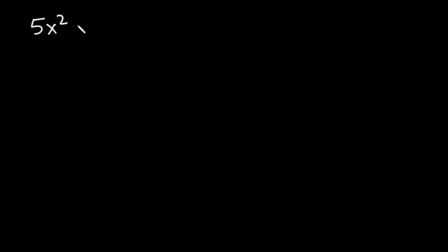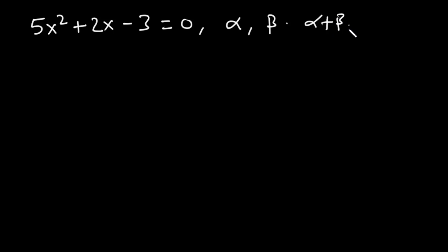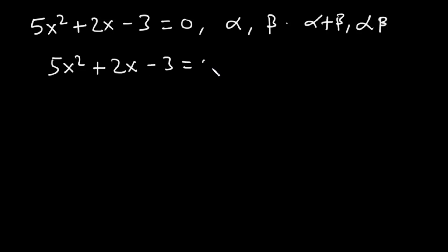Now, let's solve an example. If the roots of a quadratic equation five x squared plus two x minus three is equal to zero has roots alpha and beta, let's find the values alpha plus beta and alpha beta. Those represent the sum of roots and the product of roots. Formally, we would want to use the method of factorization, so we have five x squared plus two x minus three is equal to zero.